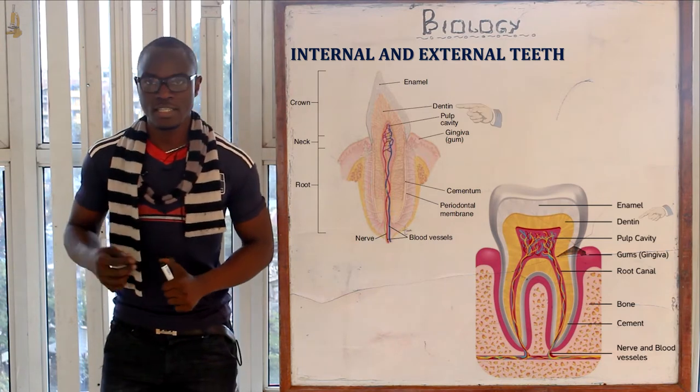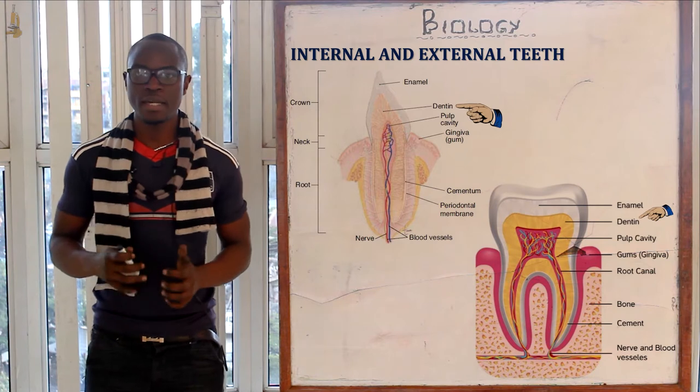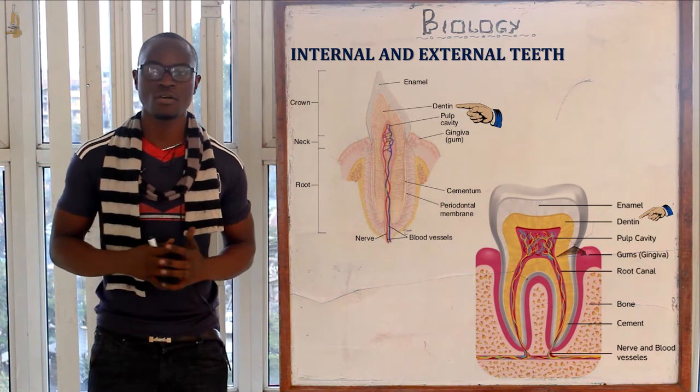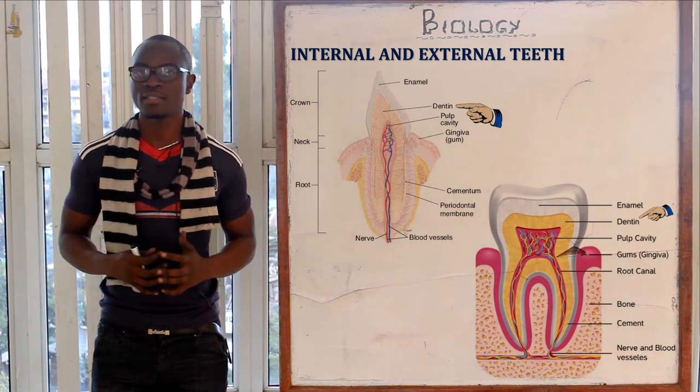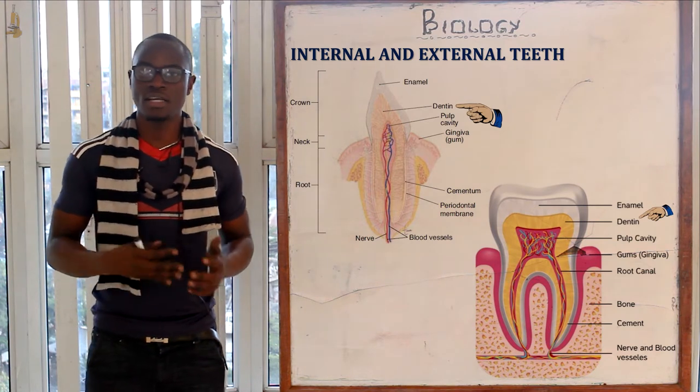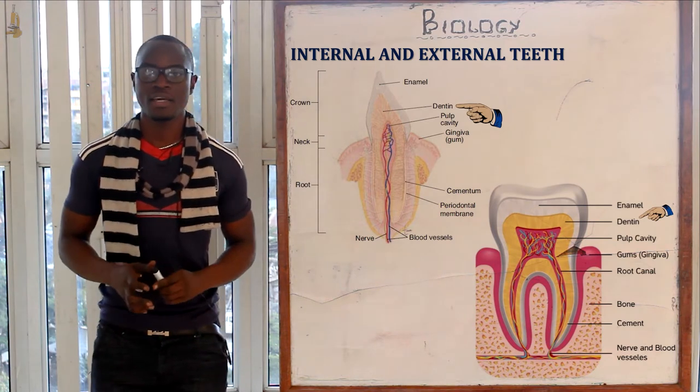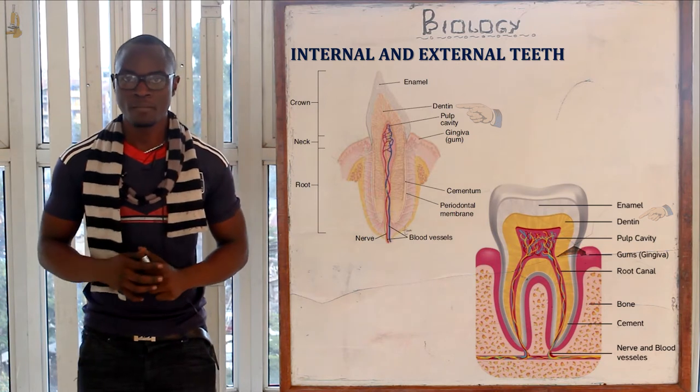Let's look at the dentine, which mainly comprises living cells that secrete the enamel.